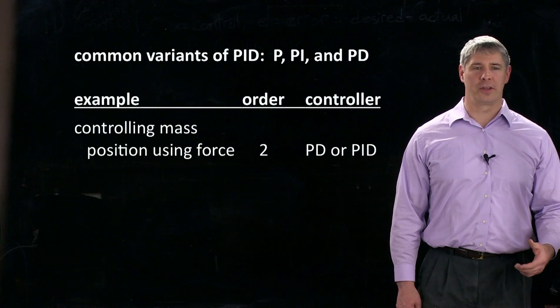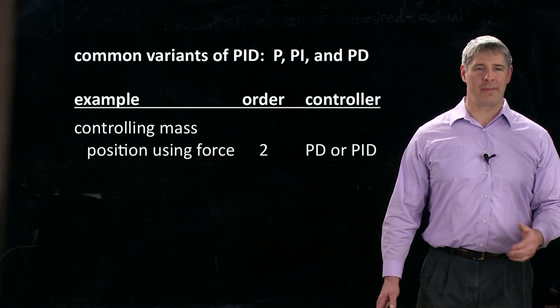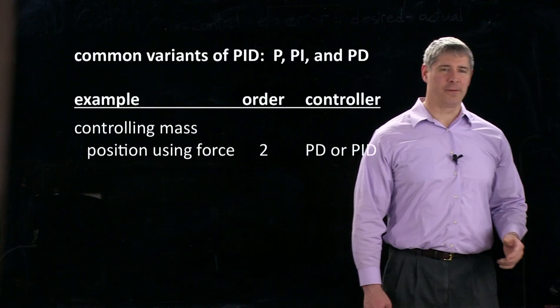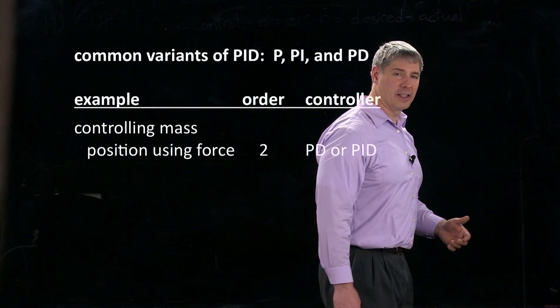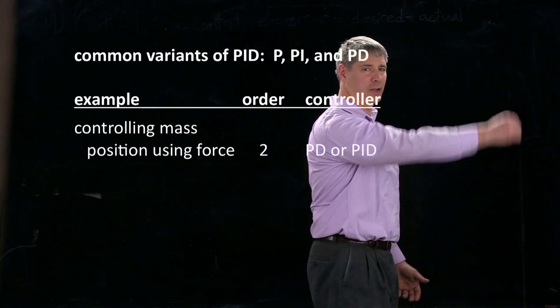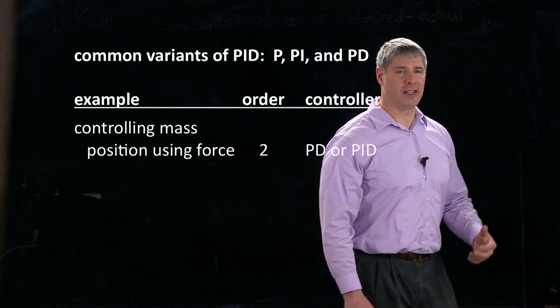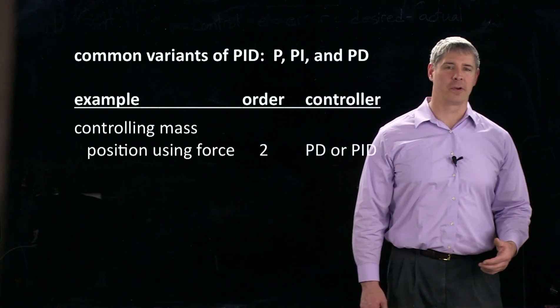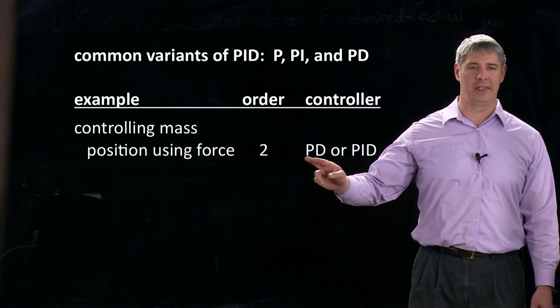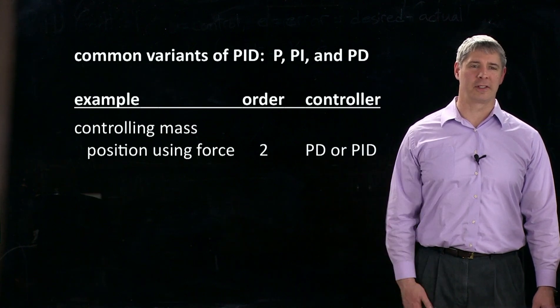If I'm trying to control a mass using a force, that maps to an acceleration. And if I'm just applying a spring to it, for example, then it's going to want to oscillate. So I need some damping. So typically for a second order system, I'll use a PD controller or a PID controller.